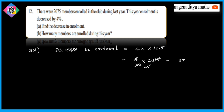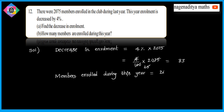Members enrolled during this year is equal to: last year 2075 minus 83. So 83 is subtracted from 2075.